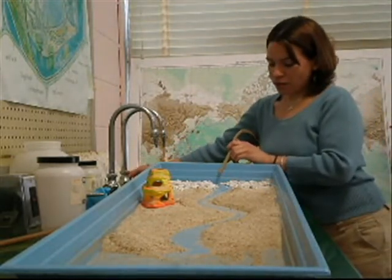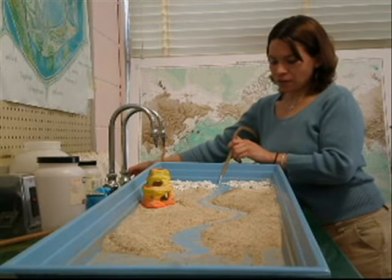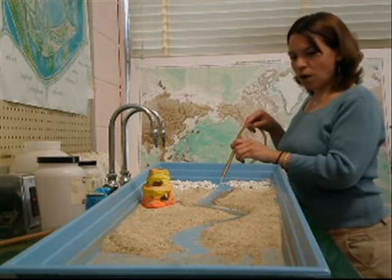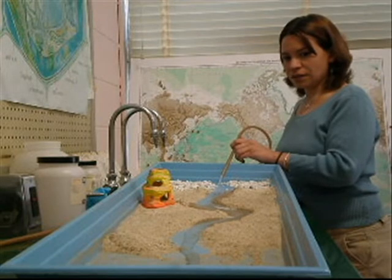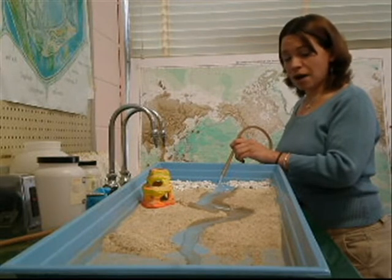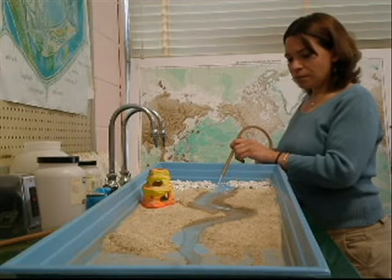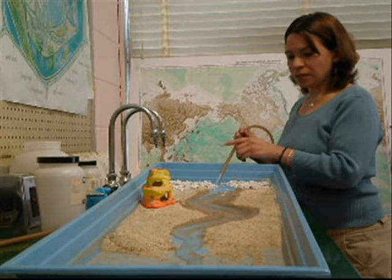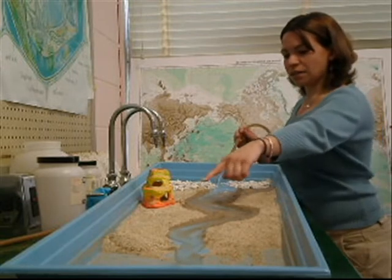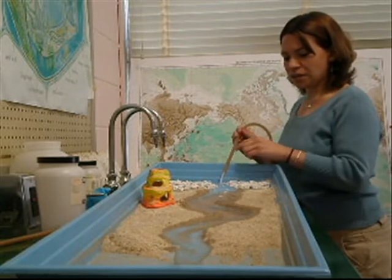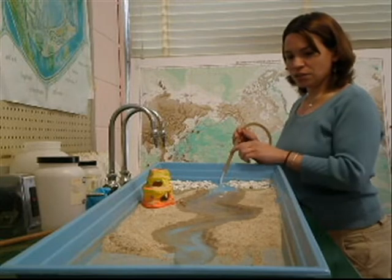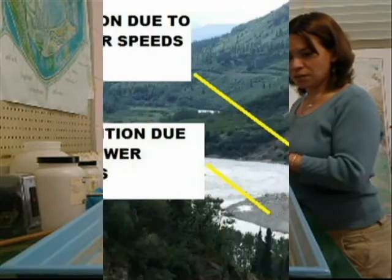So as we start the water at the river source, you'll see that at first the water just bends and winds through the river and goes out towards the bottom. But as the river speed increases, erosion will take place on the outside curve due to the faster water speed, and sediment will deposit on the inside curve, which is the slower water speed.